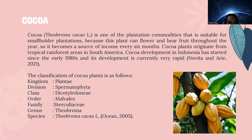The next topic is cocoa. Cocoa, or Theobroma cacao, is one of the plantation commodities suitable for smallholder plantation because the plant can flower and bear fruit throughout the year, becoming a source of income every six months. Cocoa plants originate from tropical rainforest areas in South America.